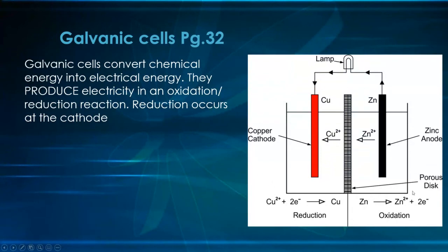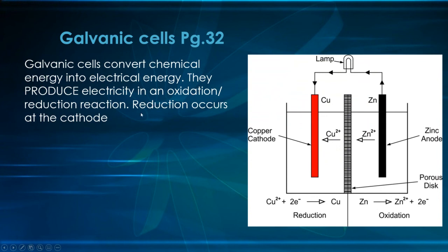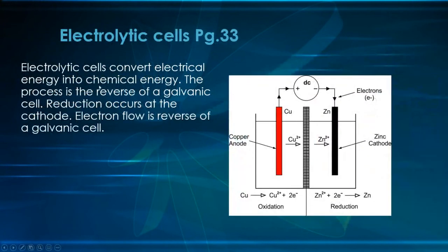You need to be able to distinguish from an image what type of electrochemical cell it is, and have a rough idea of what happens in terms of anodes, cathodes, and polarity. Galvanic cells convert chemical energy into electrical energy. The bare minimum to know: they produce electricity through an oxidation-reduction reaction, and reduction occurs at the cathode. Highlight this: reduction → cathode.